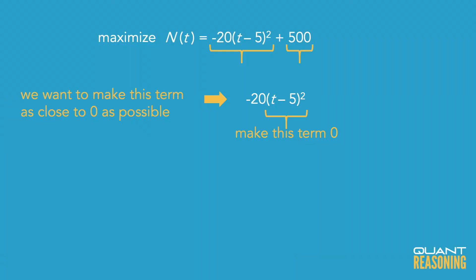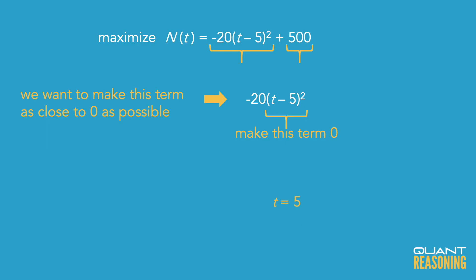So under what circumstances would negative 20 times the square of t minus 5 be zero? That would happen if t is 5. So I think that's the answer — we want t to be 5.